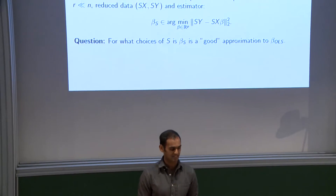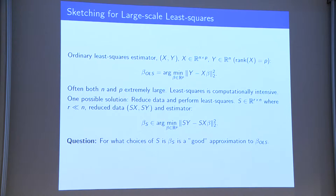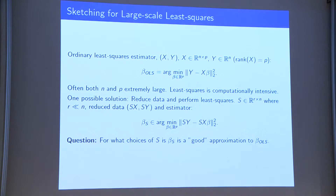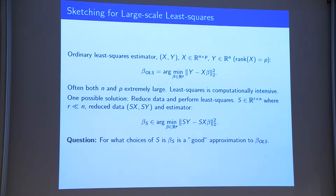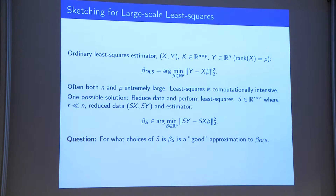To be concrete about the problem I'm looking at: this is the simplest problem you can think of but still very widely used — least squares for large-scale problems, and analogously solving large-scale linear systems. For ordinary least squares, you have your data X and Y: X is an n-by-p matrix and Y is an n-dimensional vector. We're assuming both n and p are extremely large but n is much larger than p, and for simplicity we assume the rank of X equals p.